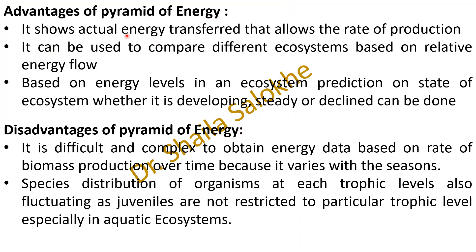Advantages of the pyramid of energy: it shows actual energy transferred, allowing the rate of production to be assessed. It can be used to compare different ecosystems based on relative energy flow. Based on energy levels in an ecosystem, predictions on the state of the ecosystem — whether developing, steady, or declining — can be made. Disadvantages: it is difficult and complex to obtain energy data based on rate of biomass production over time because it varies with the seasons. Also, species distribution at each trophic level fluctuates, as juveniles are not restricted to a particular trophic level, especially in aquatic ecosystems.